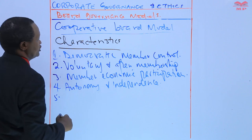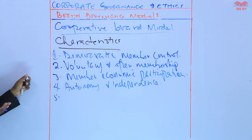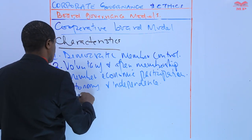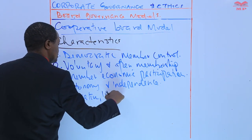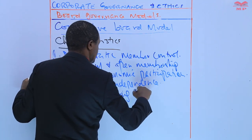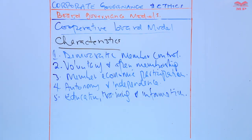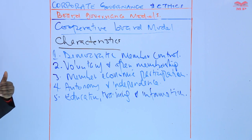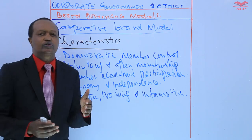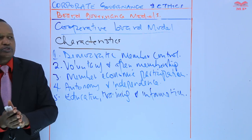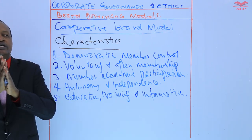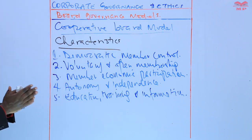Characteristic number five is education, training, and information. Cooperatives prioritize the education and training of their members, their employees, and also their leaders, in order to enhance the understanding of cooperative principles and to empower them to contribute effectively to the organization's growth and success.